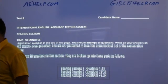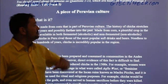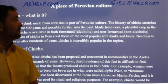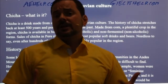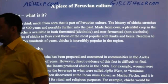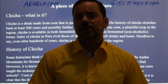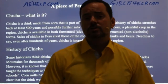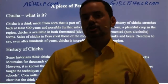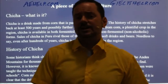The reading passage for today is titled 'A Piece of Peruvian Culture.' The first step when you get to your reading section is to carefully observe the passages. It's a good idea to look at the title of all three passages before you start reading — you don't have to start with passage one. You can start with passage two or passage three.